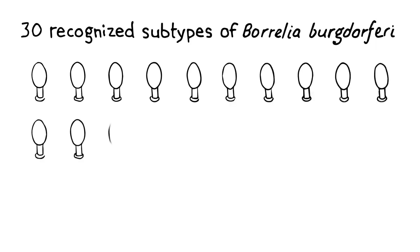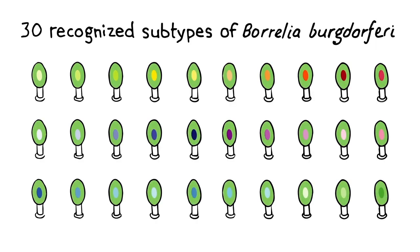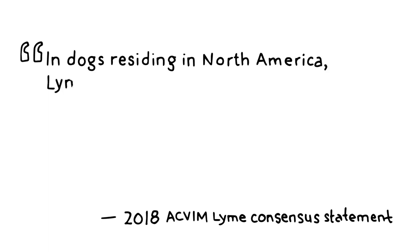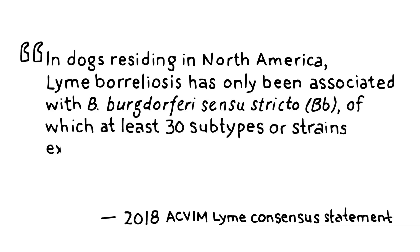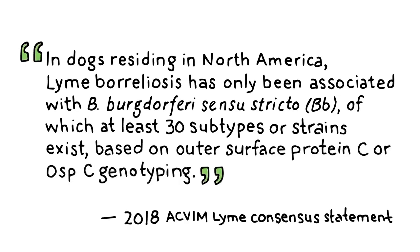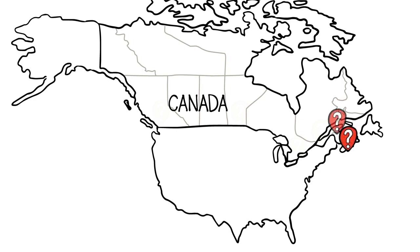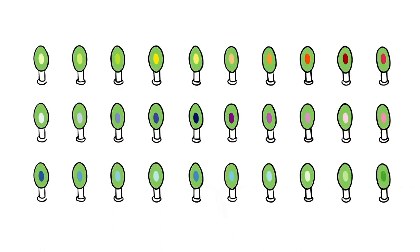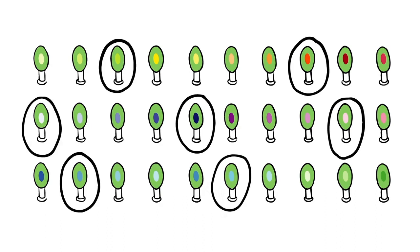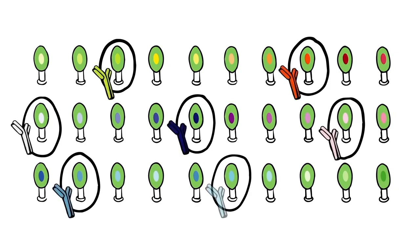It is important to understand that there are currently 30 recognized subtypes or strains of Borrelia burgdorferi based on the genotyping of OSP-C. The 2018 ACVIM Lyme consensus statement reads: In dogs residing in North America, Lyme borreliosis has only been associated with B. burgdorferi sensu stricto, of which at least 30 subtypes or strains exist based on OSP-C genotyping. These variants appear in different combinations in individual tick populations. We have limited data telling us where different types of OSP-C are found in Canada and the USA. One vaccine currently available includes antigens to seven common subtypes of OSP-C identified in one specific area of the USA, meaning it stimulates antibodies to only a small portion of the 30 known OSP-C subtypes.